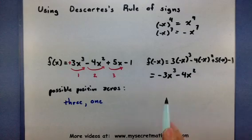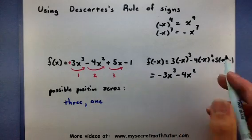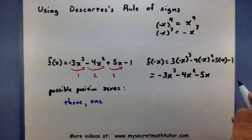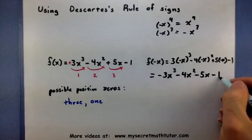This negative sign was already there. Negative x times five, so negative five x. And lastly, a minus one.